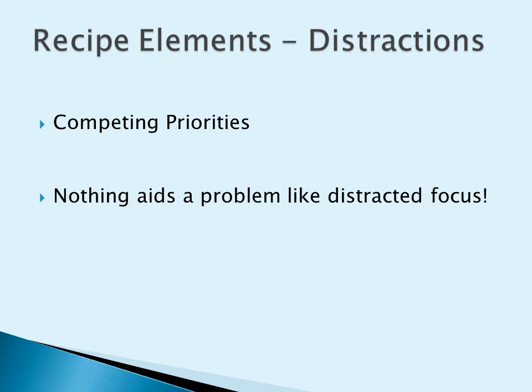Now we'll look at the distractions. What are the competing priorities for your time and energy in putting this recipe together? Is there something going on with friends or family that might take you away from the cooking process? Do you have the pressure of hungry customers up against you? Are you likely to receive a phone call that might defer you from your cooking process or just distract your attention? Is there something going on on the television — a news story, a sporting event — that might grab your attention? Or, at the most basic level, are you likely to have a call of nature in the middle of your cooking process? Any and all of these things can be primary distractions and drastically impact how well your solution comes to be. Remember, nothing aids a problem or diverts a solution like a distracted focus.